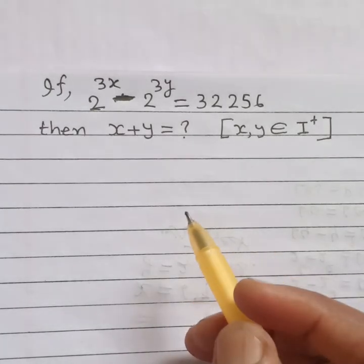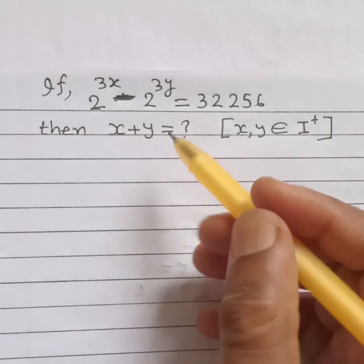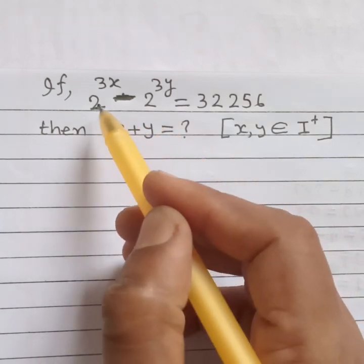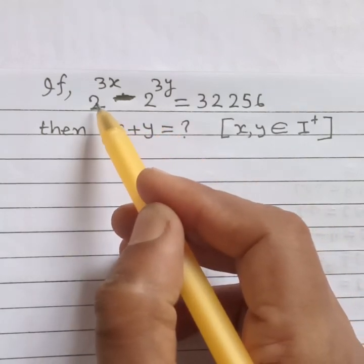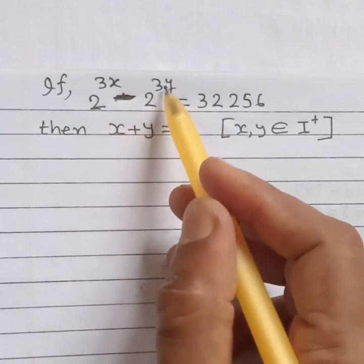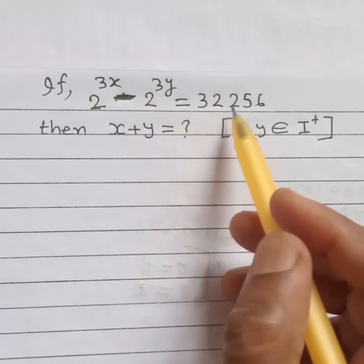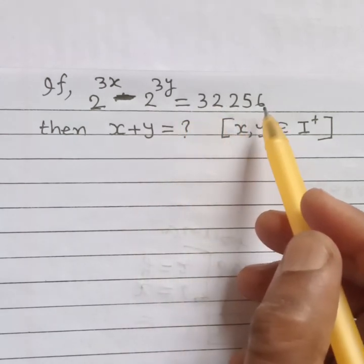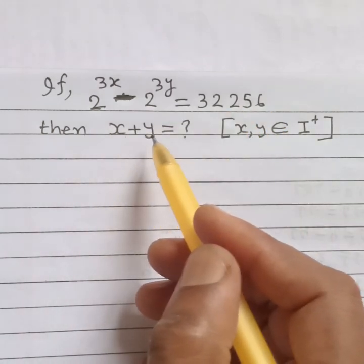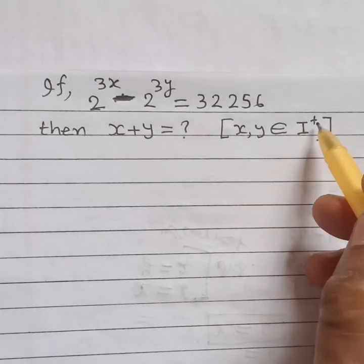Hello students, welcome. Today's problem: given 2 to the power 3x minus 2 to the power 3y is equal to 32256, what is the value of x plus y, where x and y belong to positive integers?